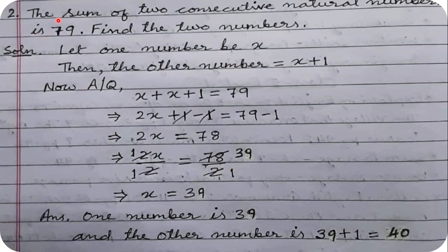Now the next problem: 'The sum of two consecutive natural numbers is 79. Find the two numbers.' Natural numbers begin from 1 — all counting numbers: 1, 2, 3, 4 and so on. Whole numbers include zero added to the natural numbers.